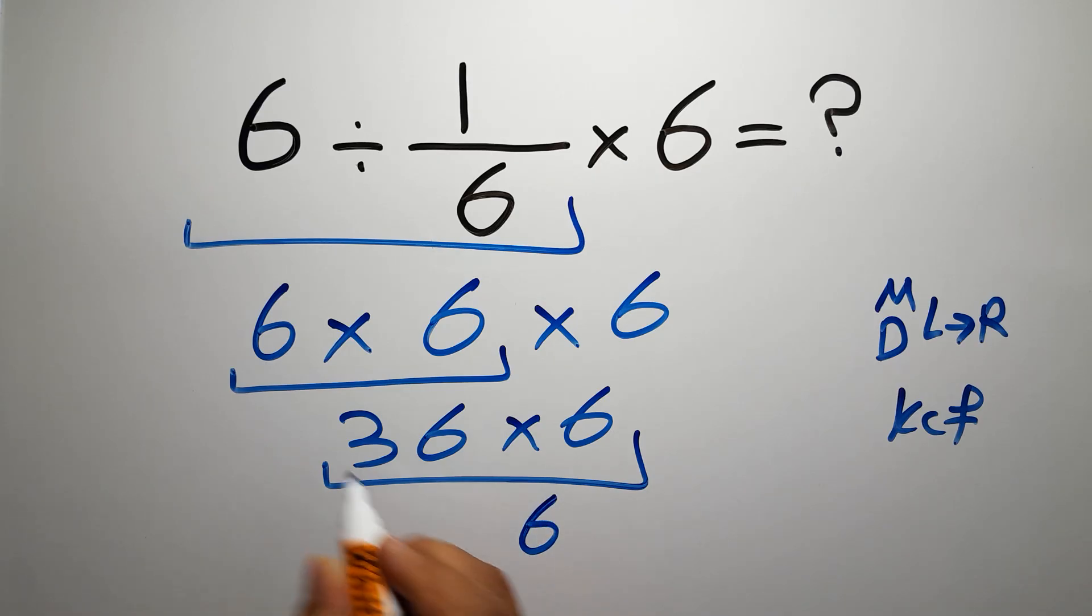We write 6 here and carry 3 here. 6 times 3 gives us 18, and 18 plus 3 gives us 21, so we have 216, and this is our final answer to this problem.